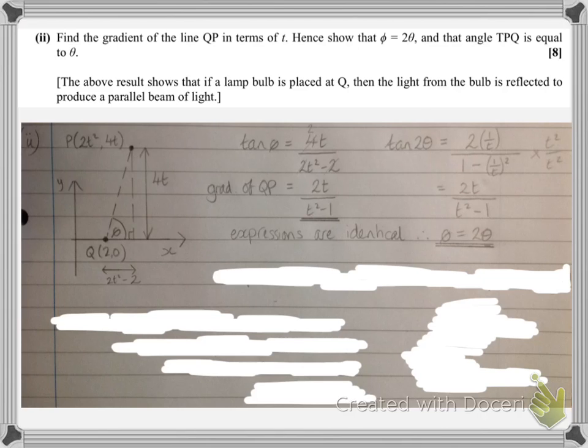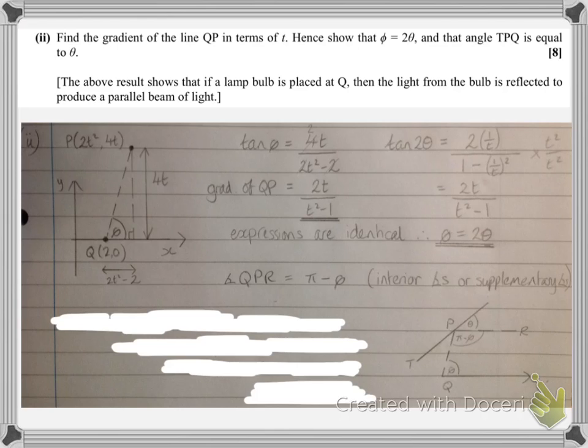So moving on, we've got this last part, the angle TPQ equal to theta. So I would want to draw a diagram here to make sure that I can see the angle required. So from T to P to Q, it's this angle in here that we're interested in, and apparently this is going to be equal to theta. Well, we've got angles that are what you might well have called U angles or interior angles at GCSE, so this angle and this one would have to add up to 180 degrees, or working in radians, they add up to pi. So if this one's phi, this one must be pi minus phi. These are called supplementary angles.